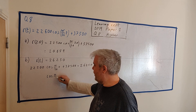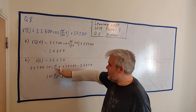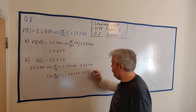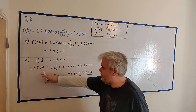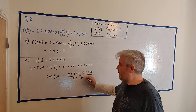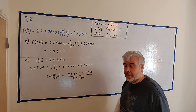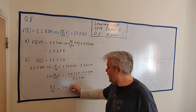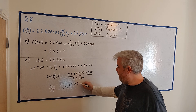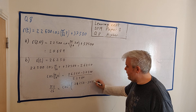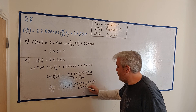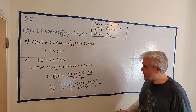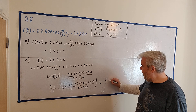Isolating the cosine term: cosine(π/26 · t) = (26,250 − 37,500) / 22,500. Then taking the inverse cosine of both sides gives π·t/26 = arccos of that value. Putting this into a calculator, we get 2π/3.